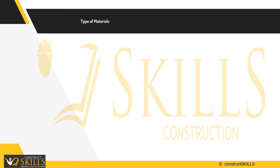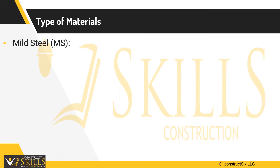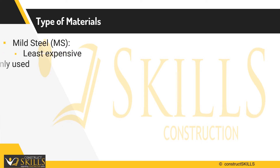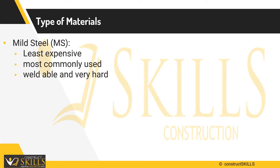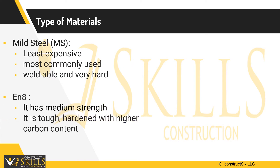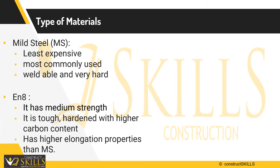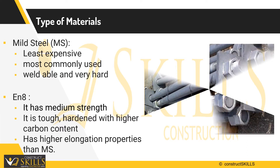There are two types of materials used in fabrication. First, mild steel — it is the least expensive material available and most commonly used. This material is easily weldable and is very hard. Second, EN8 steel — it is medium strength steel with good tensile strength. It is tough and hardened with higher carbon content. It has better elongation properties than mild steel, and so is used in anchor bolts.